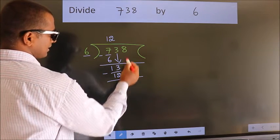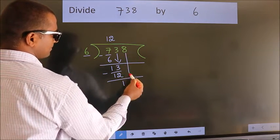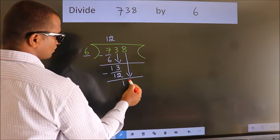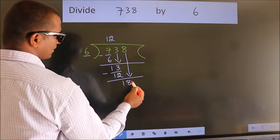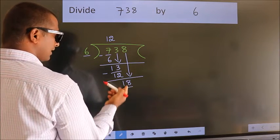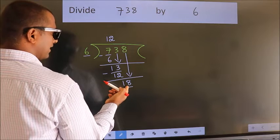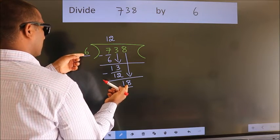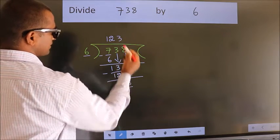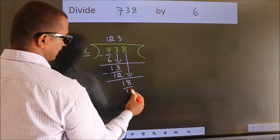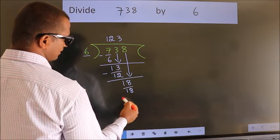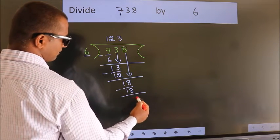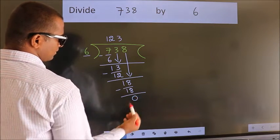After this, bring down the beside number. So, 8 down — so, 18. When do we get 18 in the 6 table? 6 threes 18. Now we subtract. We get 0.